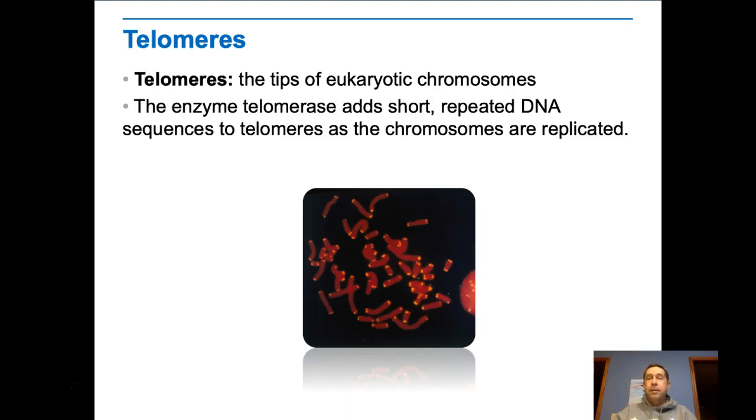Once the telomeres get to a certain length, where it becomes possible to lose some important DNA, the cell is going to do one of two things. It's either going to simply live out its life until it wears out or it's going to go through apoptosis. But it's not going to divide anymore. The only time that happens is when it's a cancer cell. You can see the lighter colored things on the diagram, those are the telomeres.